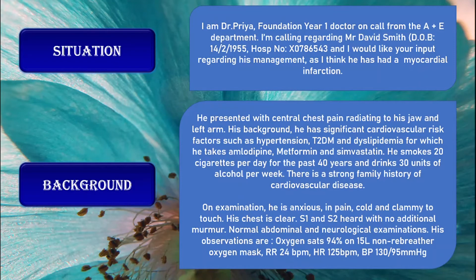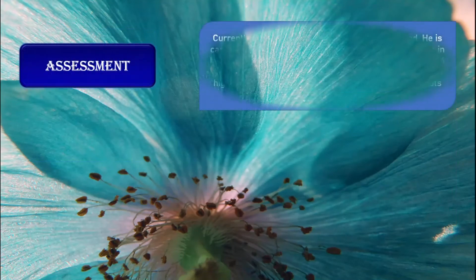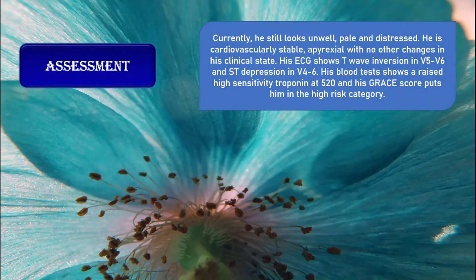On examination, he is anxious and in pain, cold and clammy to touch. His chest is clear, S1 and S2 heard with no additional murmur, normal abdominal and neuro examination. His observations: oxygen sats around 94% on 15-litre non-rebreather oxygen mask, respiratory rate around 24, heart rate around 125, and BP around 130 over 95. He currently still looks unwell, pale and distressed, cardiovascularly stable, apyrexial with no other changes in his clinical state.